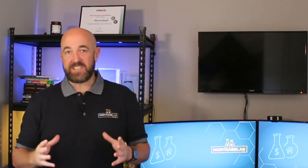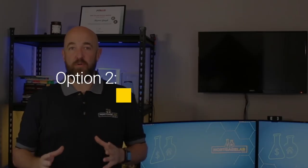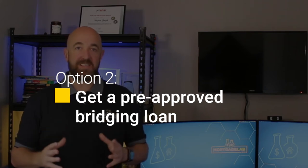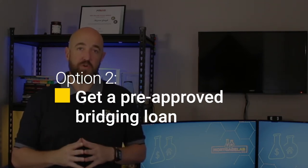This strategy doesn't work if the house you are buying is being sold by auction as all sales at auction are unconditional. Your next option is to make an offer with a pre-approved bridging loan. Lenders can provide you with bridging finance to allow you to purchase your new home before selling your existing one.